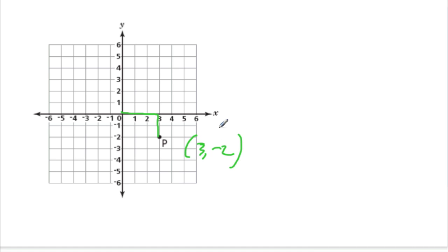The most common mistake is perhaps to switch that, to say negative 2 first, then 3. Just remember, that's not correct because the x-axis comes first. It's the independent axis.